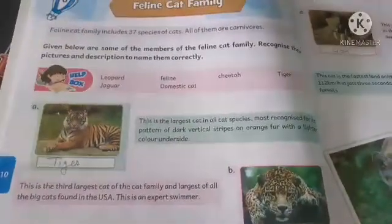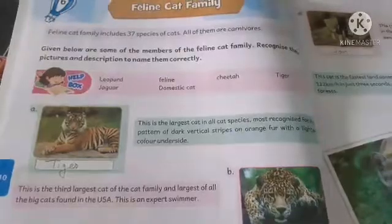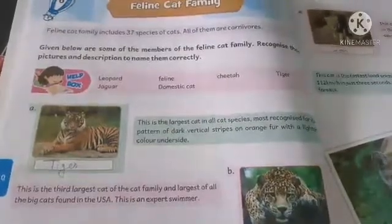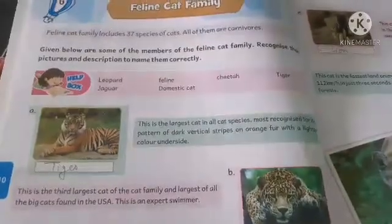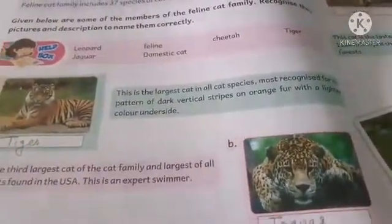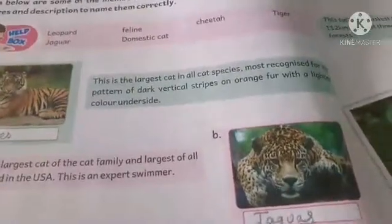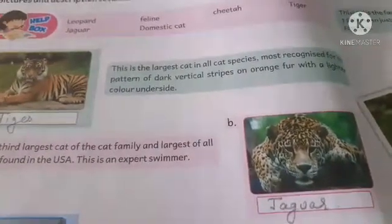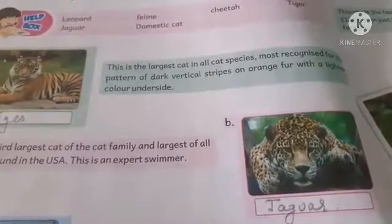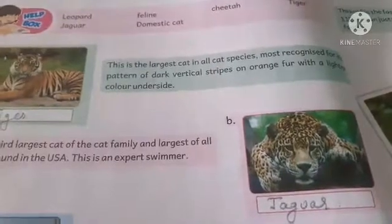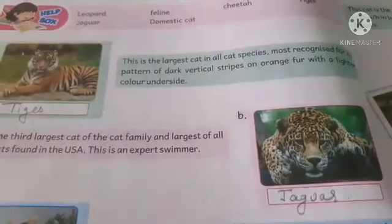Given below are some members of the feline cat family. Recognize the pictures and match the descriptions with their names correctly. All the descriptions are given — you have to write the correct name with them. This is the largest cat in all the cat species, most recognized for its pattern of dark vertical stripes on orange fur with a lighter colored underside.